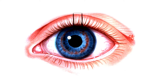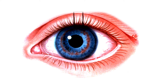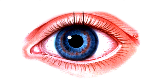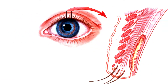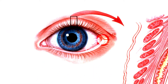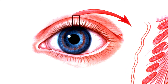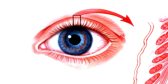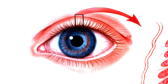Eyelids: the outer structures that protect the eyeball and lubricate the ocular surface. Within each lid is a tarsal plate containing meibomian glands. The lids join at the medial and lateral canthi. The space between the two open lids is called the palpebral fissure.